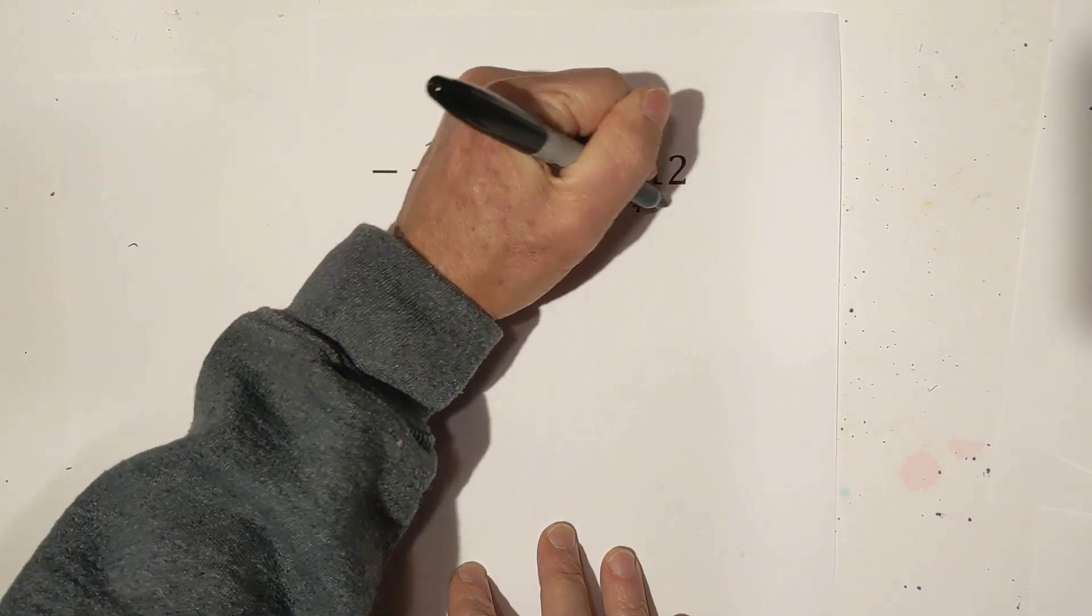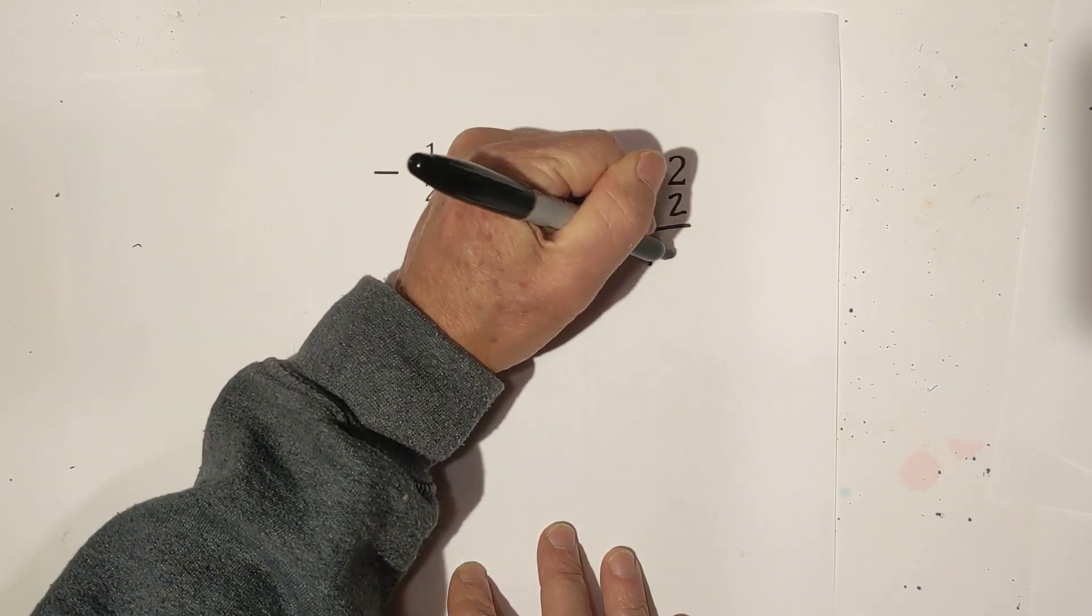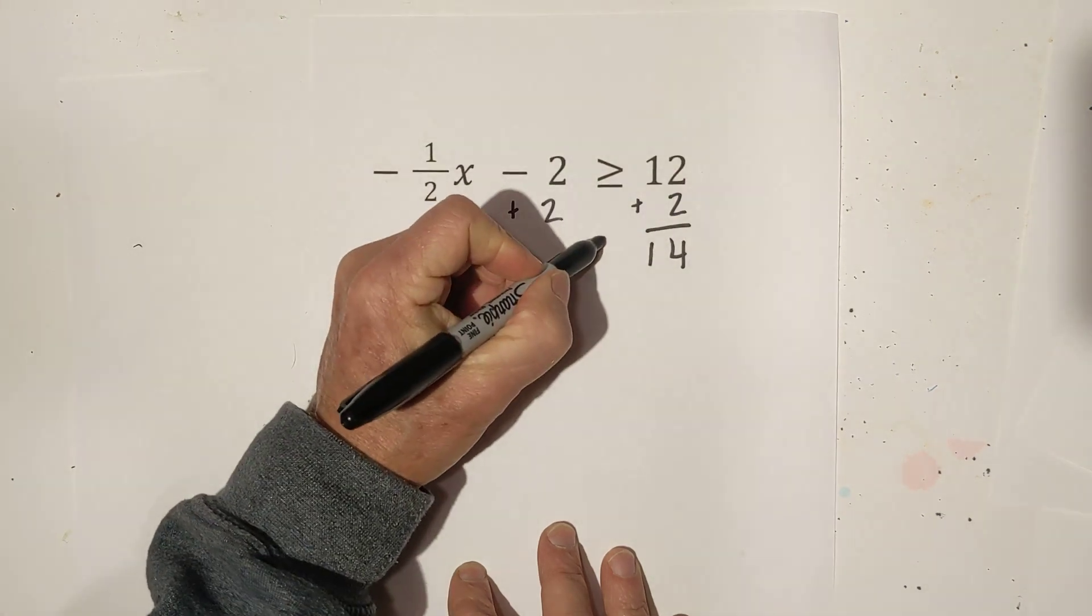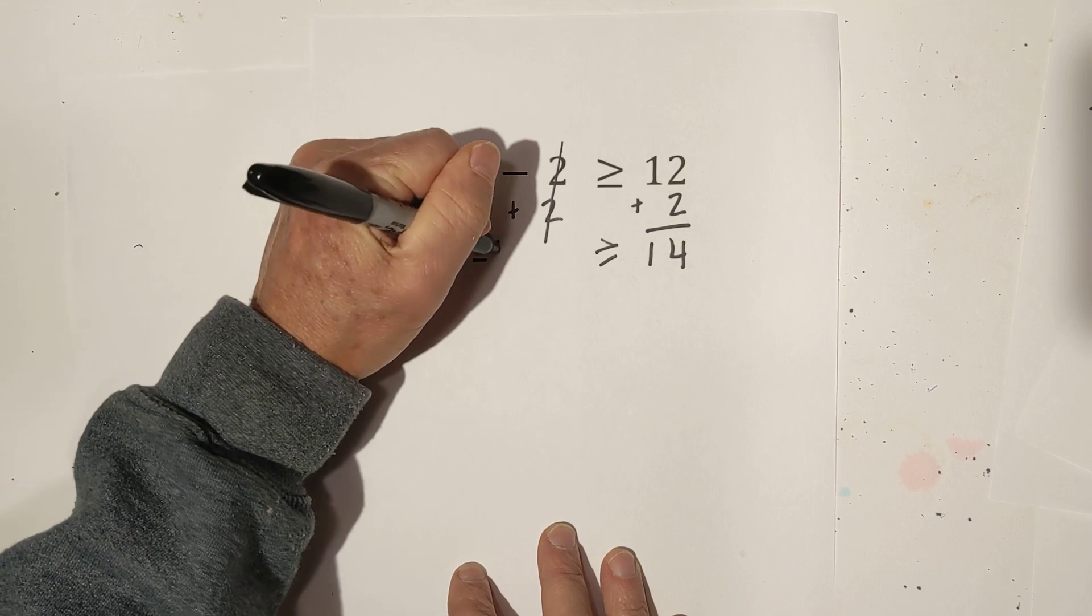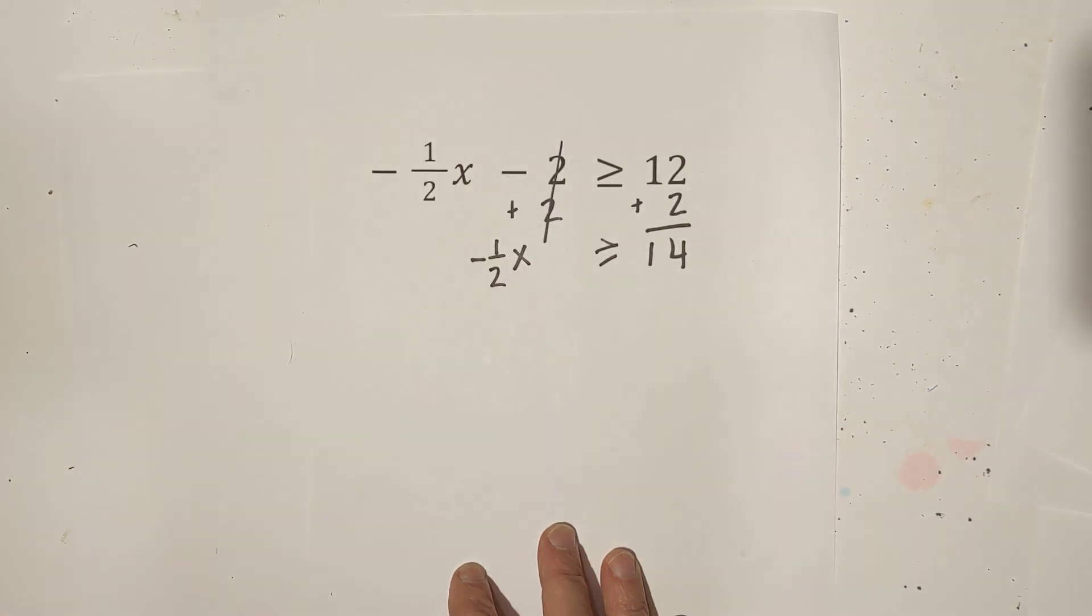So we're going to add 2 to both sides. That becomes 14 greater than, these cancel. Now we have a negative 1 half x.